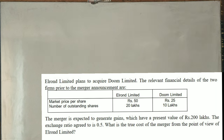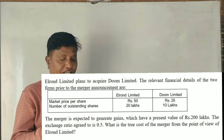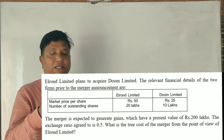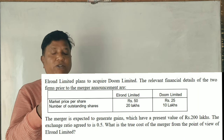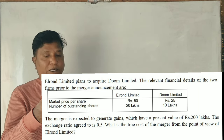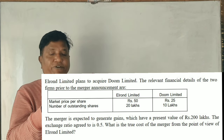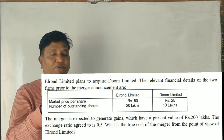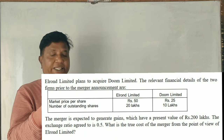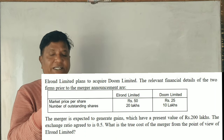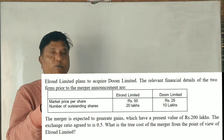Advanced Financial Management, third problem. E-Limited plans to acquire D-Limited. The relevant financial details prior to the merger announcement: E-Limited market price per share ₹50, D-Limited market price per share ₹25; outstanding shares 20 lakhs and 10 lakhs respectively. The merger is expected to generate gains with a present value of ₹200 lakhs. The exchange ratio agreed to is 0.5.